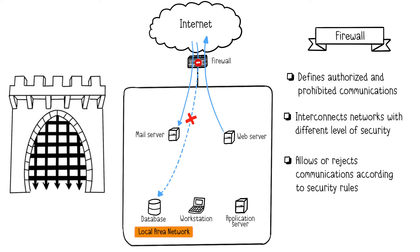The firewall's goal is to filter communications between zones, analyze them, and then allow or reject them according to security rules. Common filtering criteria include the origin and/or destination of packets using IP addresses and ports, options within the data such as fragmentation or validity, the data itself, and even user authentication for modern firewalls.